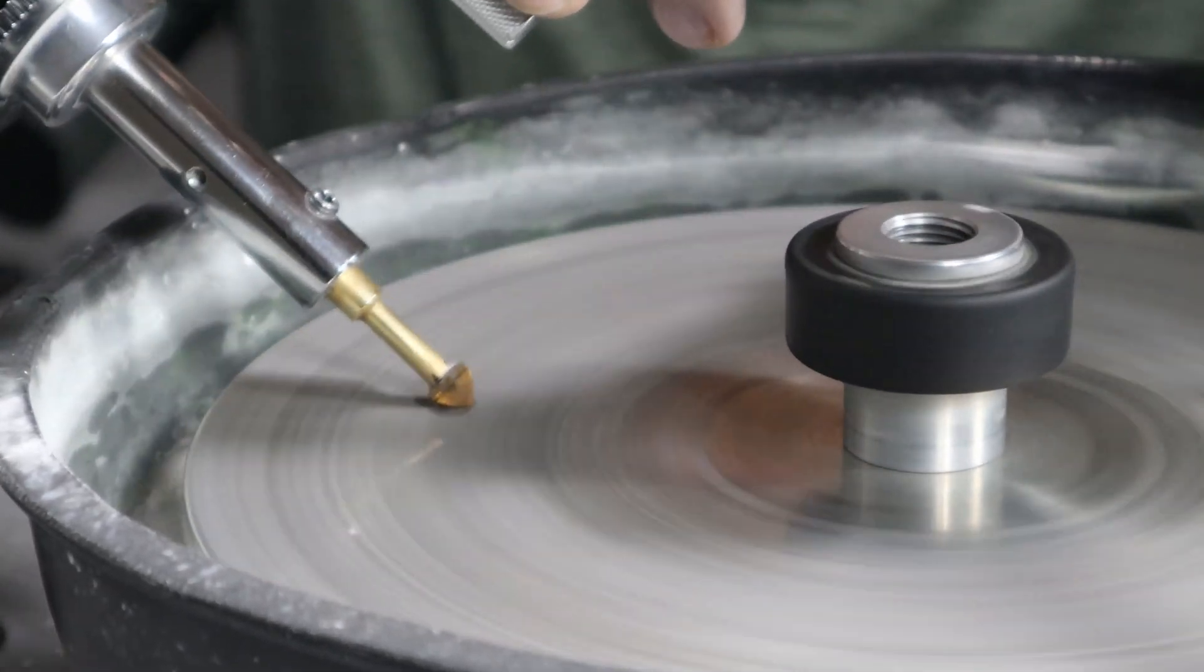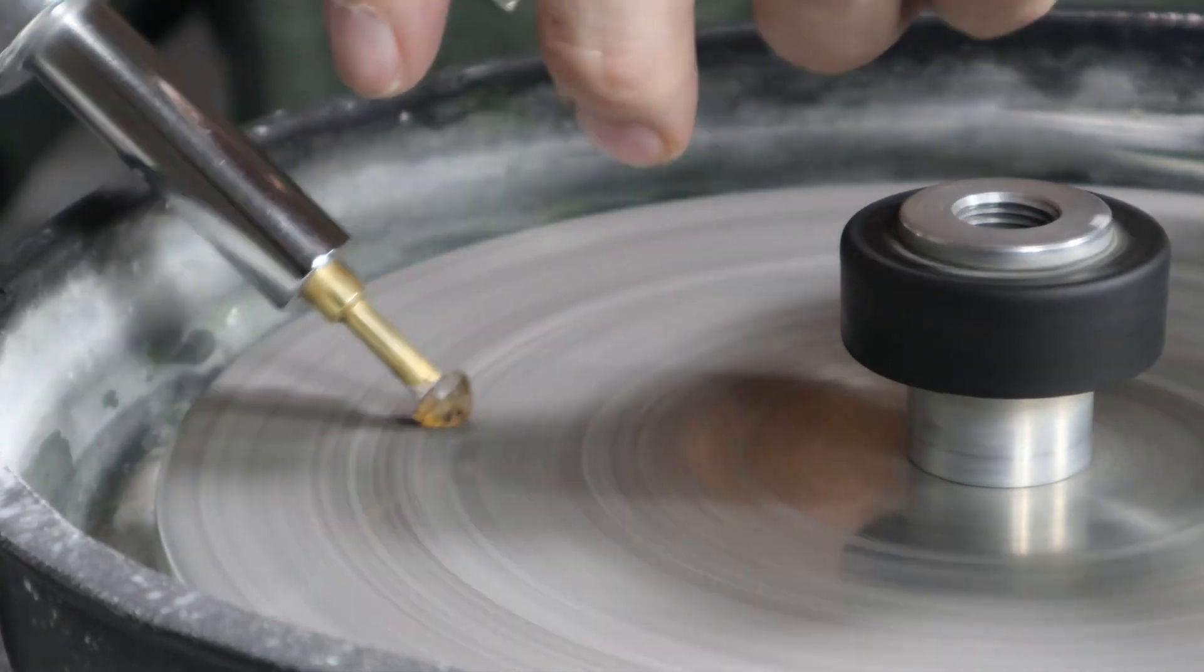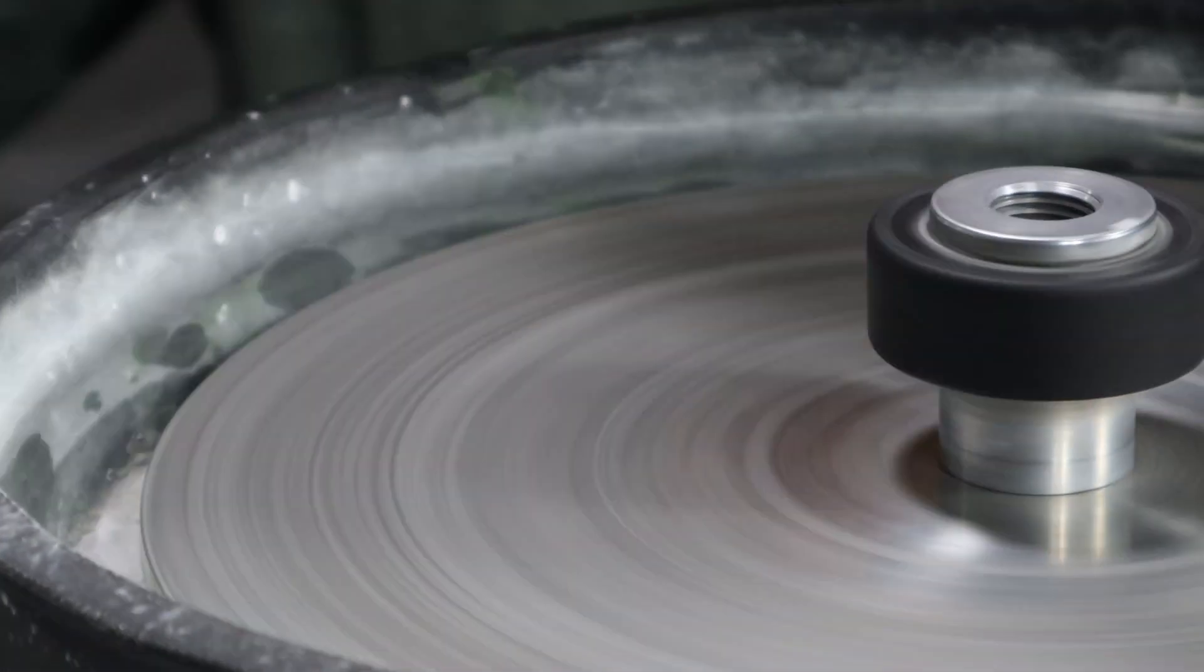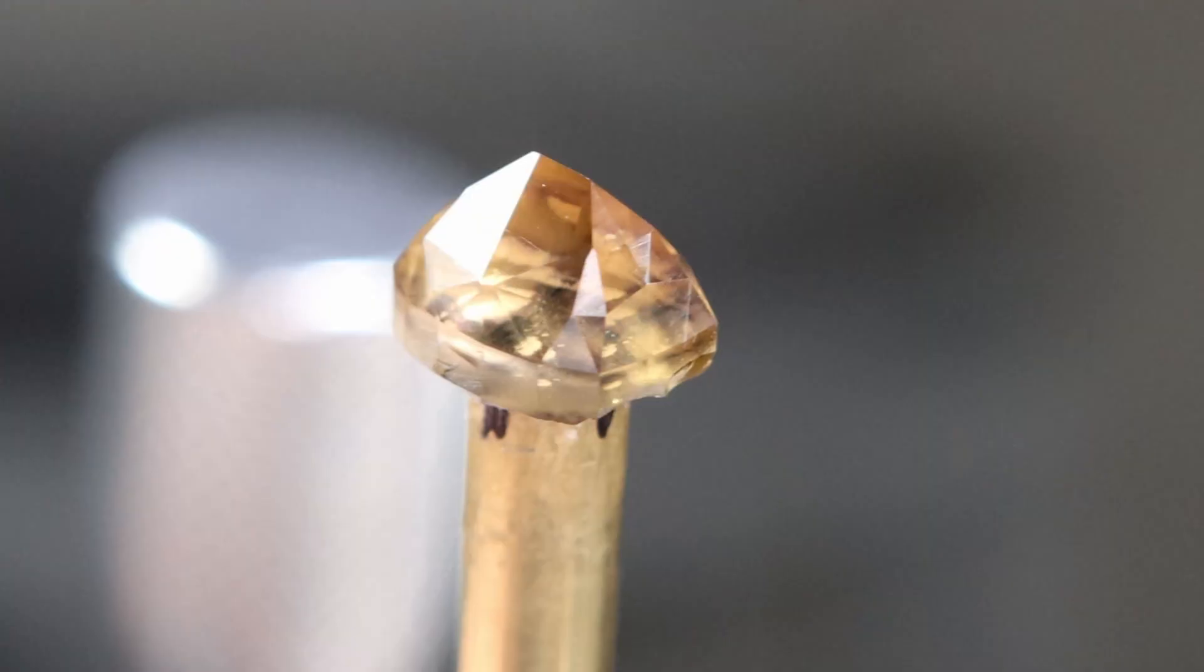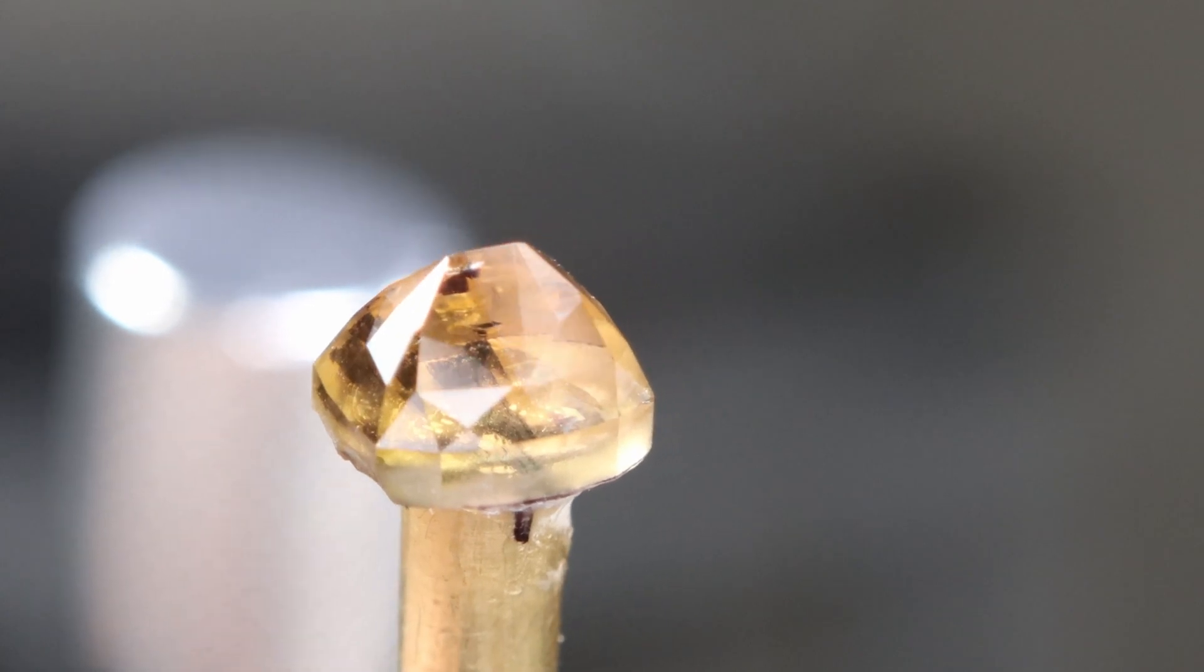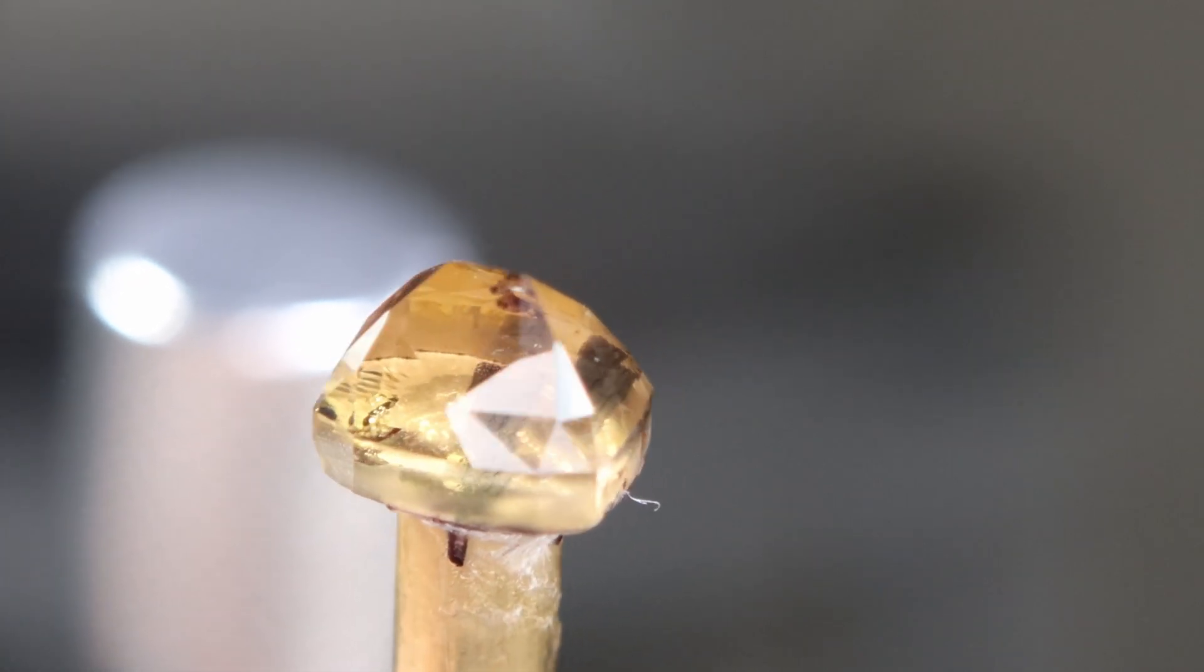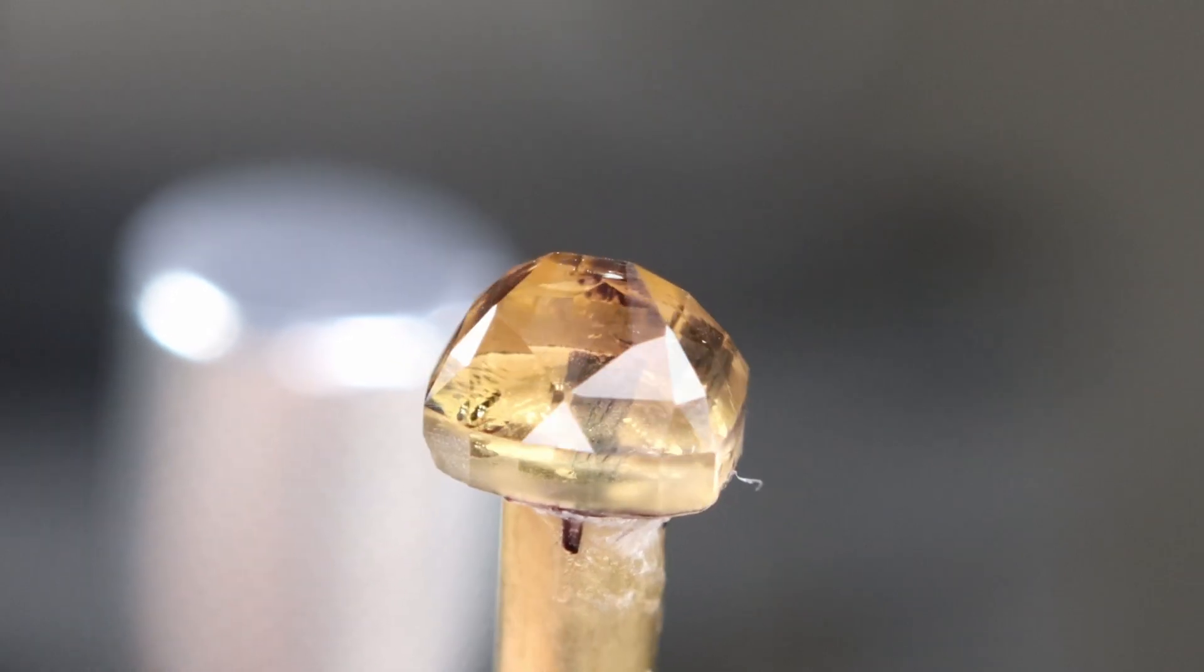I use 3000 diamond grit on a tin lap to prepare the stone for final polish. The 3000 grit works fairly quickly at cutting out the rough scratches left from the 600 grit and allows the final polish to go quickly. When cutting stones I almost always go from 600 grit to 3000 grit and then on to whatever I use for final polish depending on stone type.